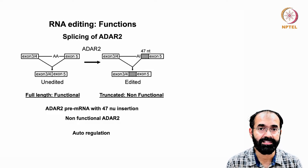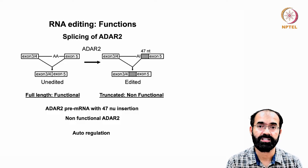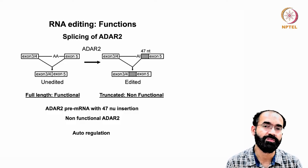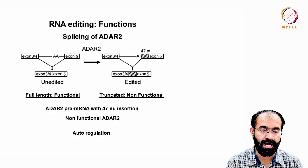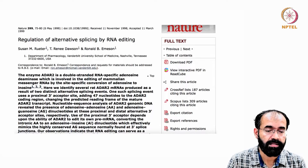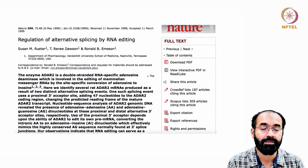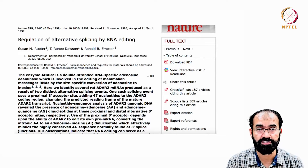If you cut the branch you are sitting on, you will fall and get injured. Similarly, when ADAR2 levels are excess, ADAR2 edits its own RNA to produce a non-functional version — a form of autoregulation. Normal ADAR2 levels are needed for normal editing such as AMPA receptor modification, but excess must be reduced. This autoregulation mechanism is also described in a Nature article on regulation of alternative splicing by RNA editing, which is recommended reading.